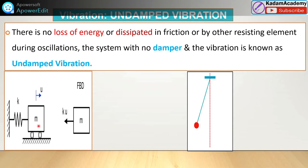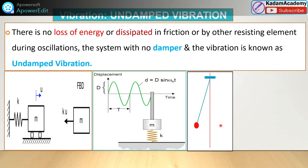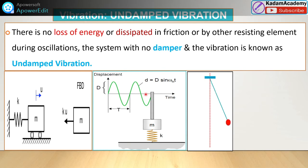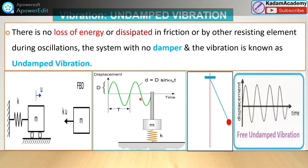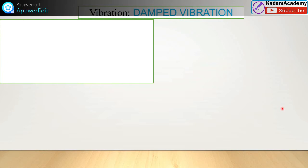Examples of undamped vibration include the spring-mass system and a simple pendulum. The response curve for undamped vibration remains continuously the same amplitude without decreasing. For more details, there are about 40 undamped vibration videos with numericals available in the playlist. The undamped vibration response curve remains constant over time.